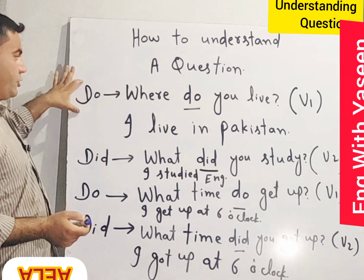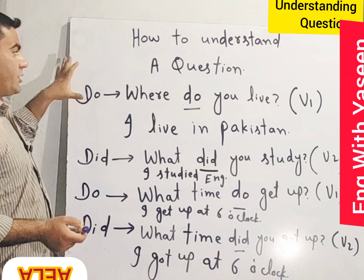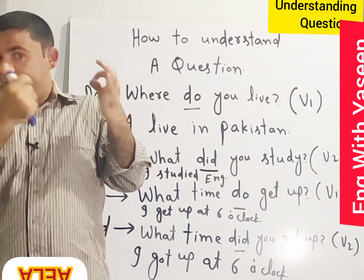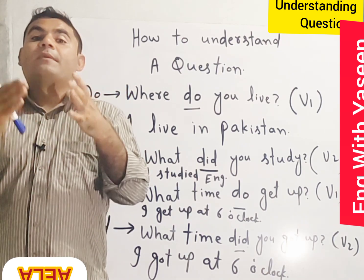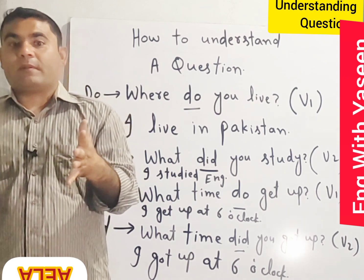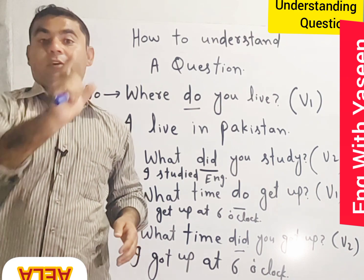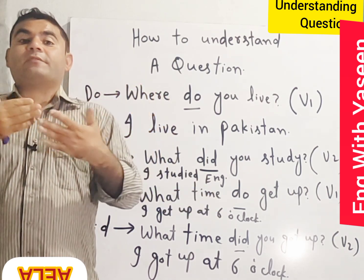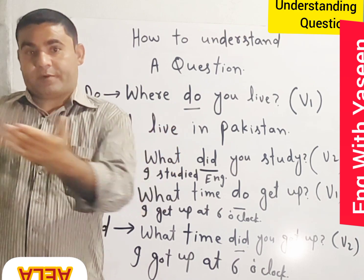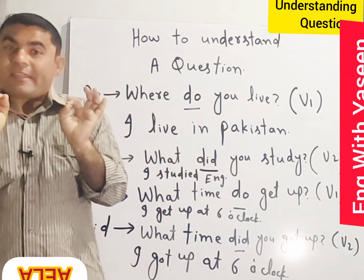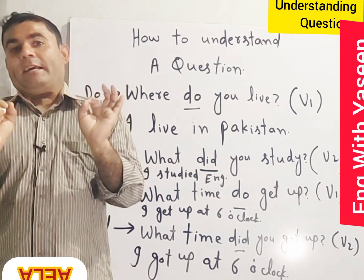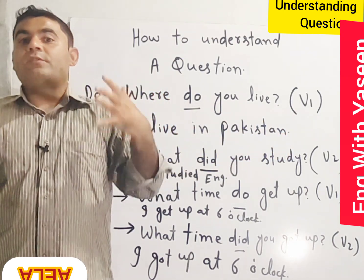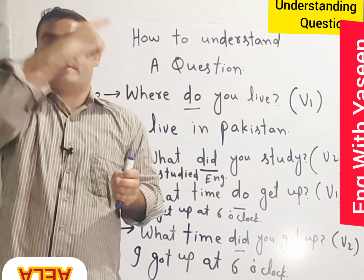When a question is asked with 'do' — for example, 'Where do you live?' — the first thing that should come into your mind is that the person is asking about your routine. For example, 'What do you do in your free time?' means the person is asking about your routine. 'Where do you live?' asks about your permanent residence. 'What time do you get up?' asks about your routine. Whenever there is 'do' in a question, the person is asking about your daily habits or daily routine.